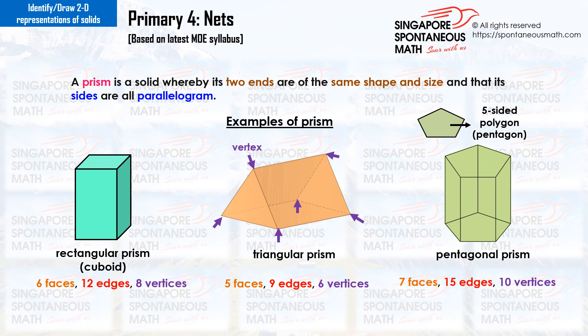A pentagon is a five-sided polygon. A pentagonal prism has 7 faces, 15 edges and 10 vertices.